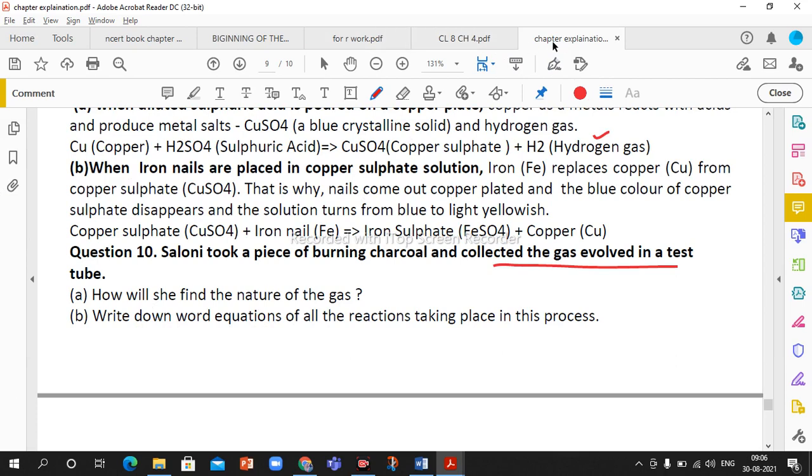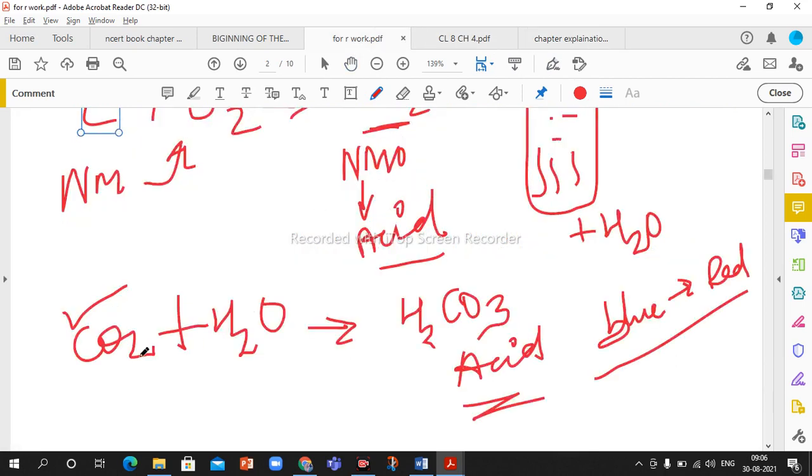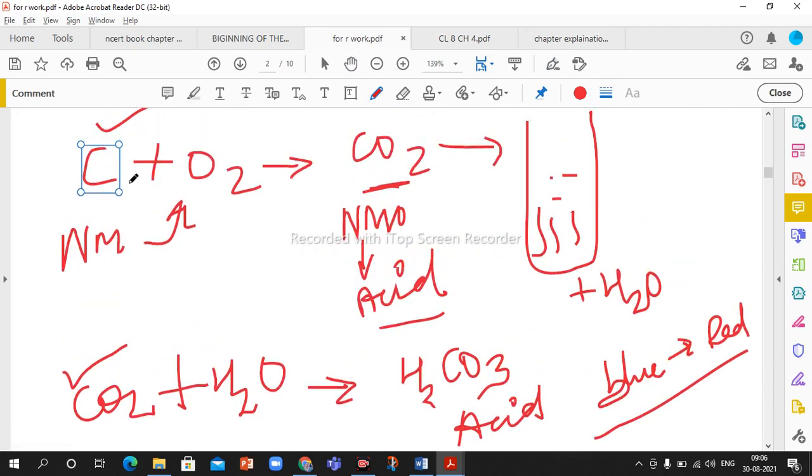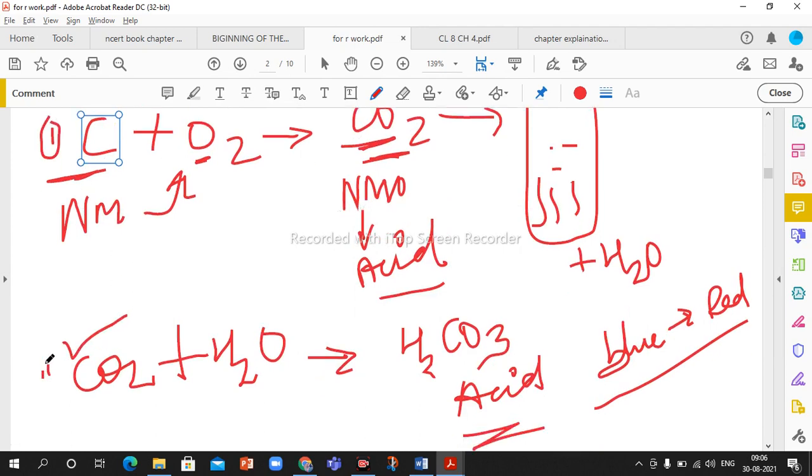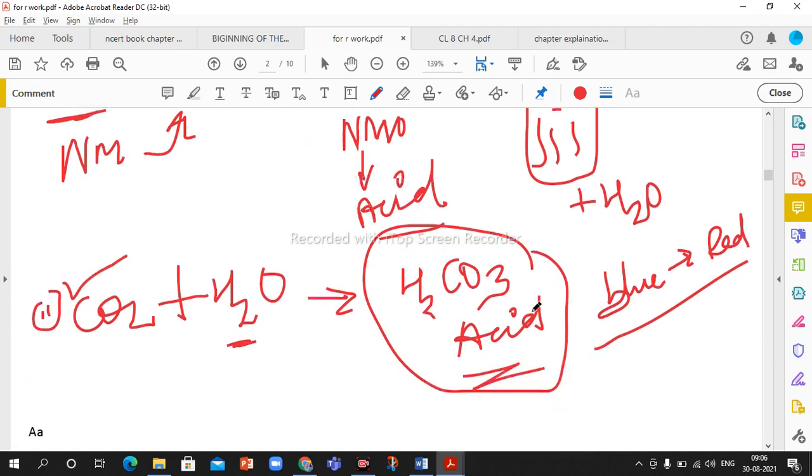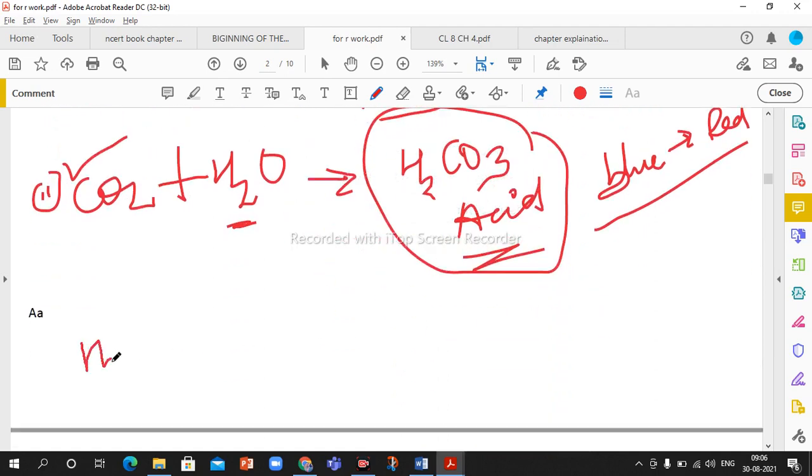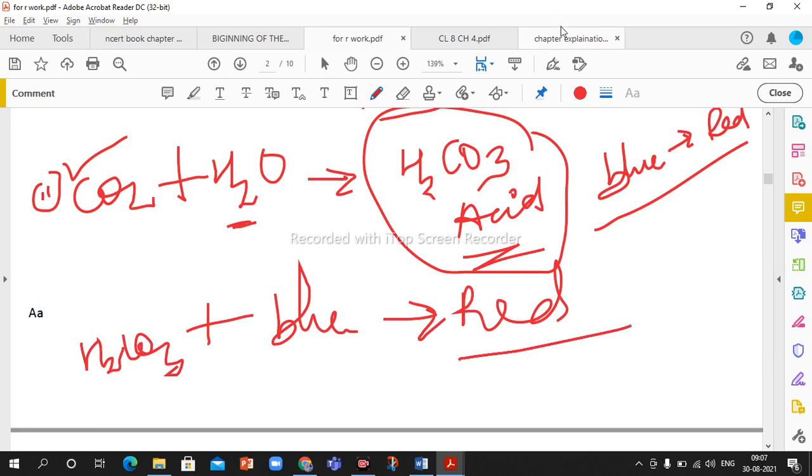Write down word equations of all the reactions that take place. First reaction: carbon plus oxygen produces carbon dioxide. Second reaction: carbon dioxide reacts with water and carbonic acid will form. Third reaction: carbonic acid changes blue litmus paper into red. These three reactions we will conclude in this.